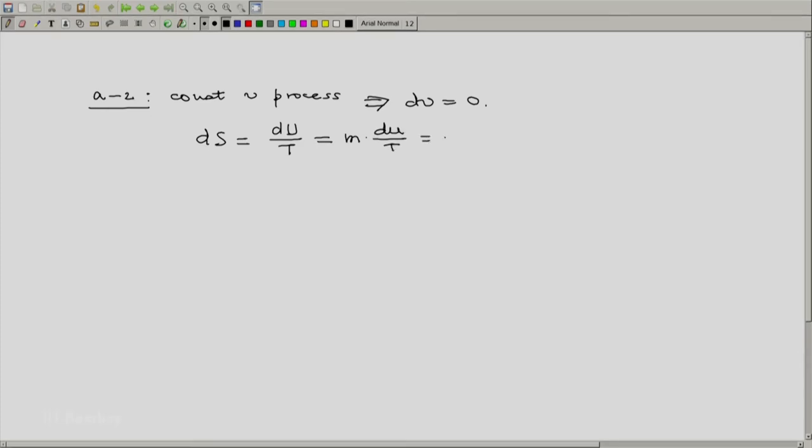And integrating this from A to 2, we will get S2 minus SA equal to M integral A to 2 of Cv dT by T. This is our second expression.